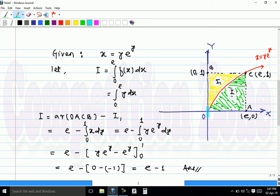So if we complete the rectangle OACB, obviously this rectangle has area e. And we can find the area i1, the yellow area, area above the curve. Area between the curve and y-axis is i1.